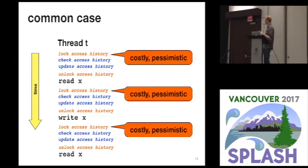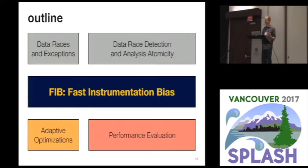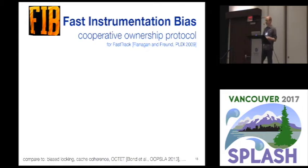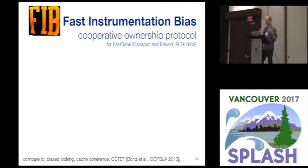With this motivation, we want to think about how to design a better way. So we've built FIB — Fast Instrumentation Bias — a cooperative ownership protocol that extends the FastTrack dynamic data race detector. It's inspired by the same sorts of ideas that underlie systems like biased locking, cache coherence, or the Octet concurrency analysis tool.